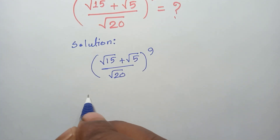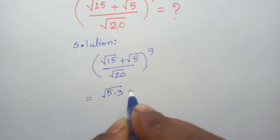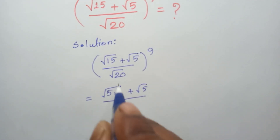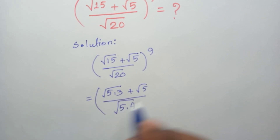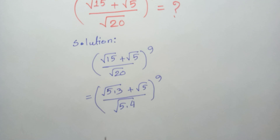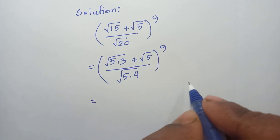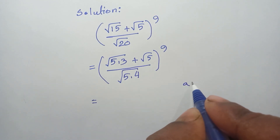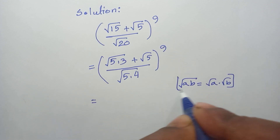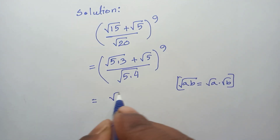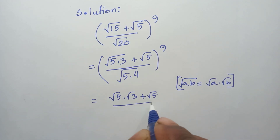First, we can write √15 as √(5×3), and √20 as √(5×4). We know that √(ab) = √a × √b, so according to this formula we can rewrite the expression as (√5·√3 + √5) / (√5·√4), all raised to the power 9.